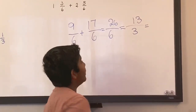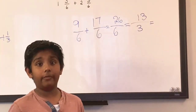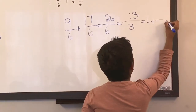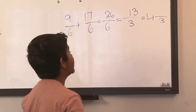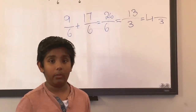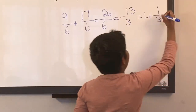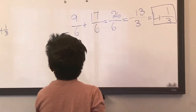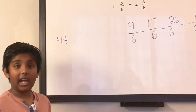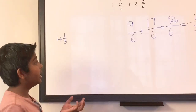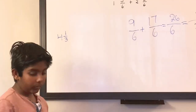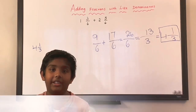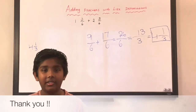Three times what number is closest to thirteen? Three times four is twelve. So four is the whole number, three is the denominator, and the remainder is one because thirteen minus twelve is one — giving us four and one-third. We have the same answer! We did it in two methods and got the same answer. So that's how you add fractions with like denominators. See you next time, thanks for listening.